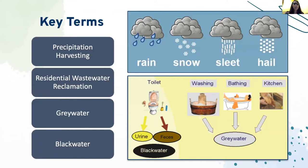I'd like to introduce some key terms we'll be using throughout our presentation. Precipitation harvesting is the collection of precipitation, including rain, snow, sleet, and hail, for repurposing before the precipitation can soak into the ground or enter storm drains and waterways. Residential wastewater reclamation is the reuse of graywater as an on-site alternative residential water source. Graywater is wastewater that does not encounter human waste, while blackwater is wastewater that does encounter human waste.